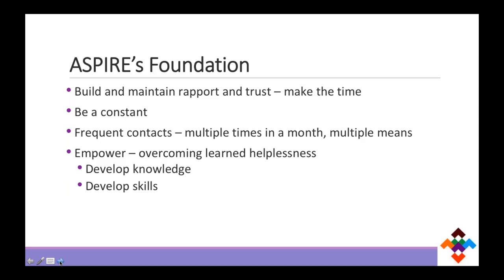One of the things we said when we started Aspire was that we really need to build and maintain a foundation of rapport and trust — and it takes time. It happens because we show up all the time. We become a constant. Oftentimes these families have revolving doors of service providers in their lives. We've made a commitment to be there every month. We frequently stay in touch multiple times a month — maybe that's texting, sending a letter, or sending flyers for parent center activities. We meet face to face once a month regardless of the distance, because ultimately we're hoping to empower these families so they can overcome learned helplessness and develop knowledge and skills to become more independent and self-sufficient.